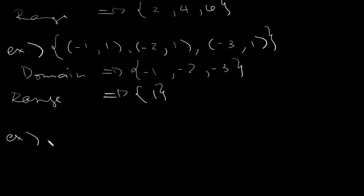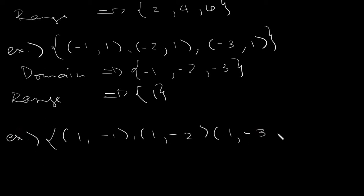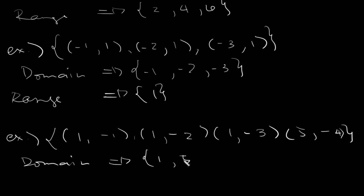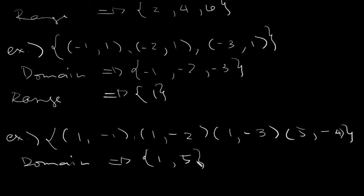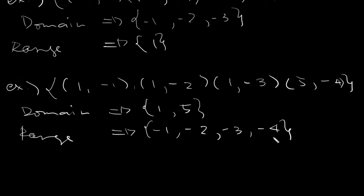The third example is {(1,-1), (1,-2), (1,-3), (5,-4)}. Our domain — the values for x — would be 1 and 5. Remember, the 1s here are repeating, so we just consider them as one element. As for the range, it's -1, -2, -3, and -4. The range is not repeating, but in our domain it repeated. This is still a valid relation — it's just simply a collection or set of ordered pairs.